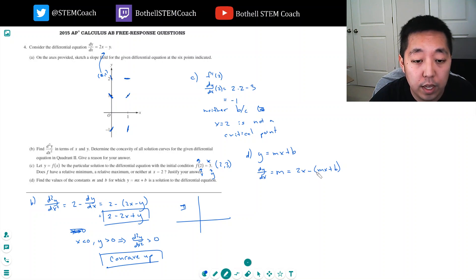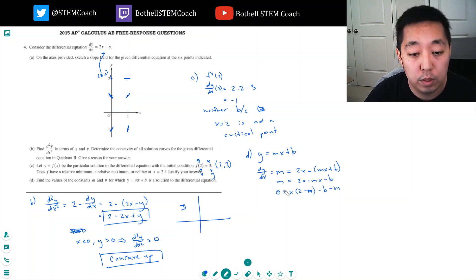So, what I have is this. I have m is equal to 2x minus mx minus b. So, the way you kind of solve this one is I'm going to set everything equal to 0, and I'm going to factor out x here. x(2 minus m) minus b minus m. Now, for this to be a solution to the differential equation everywhere, for this to be 0, this part has to be 0, this part has to be 0. Because the coefficient in front of x has to be 0. So, that means m minus 2 has to equal 0. Because if they're not equal to 0, then this is not equal to 0 everywhere. So, that means m equals 2. And then, negative b minus m has to equal 0. But since m is 2, this is negative b minus 2 equals 0. So, b has to equal negative 2.